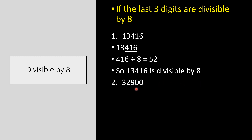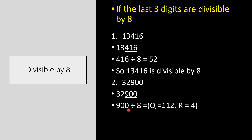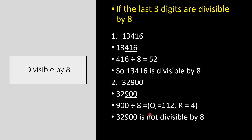Let us take one more example: 32900. The last three digits are 900. Now 900 divided by 8 gives a quotient of 112 and a remainder of 4 — there is a remainder, so 900 is not divisible by 8. Therefore, 32900 is not divisible by 8.